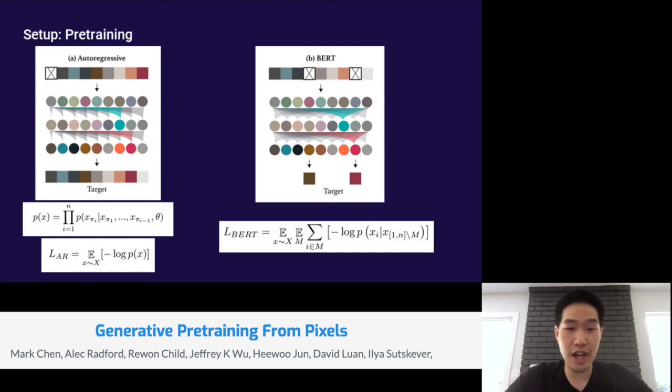I'm going to take the next few slides to describe our setup. Since we're doing generative pre-training, I'll first start with our pre-training setup. Here we're training an autoregressive objective. In the autoregressive objective, we work with the natural raster order for pixels in the image, and we simply maximize the log likelihood over our training set given this factorization.